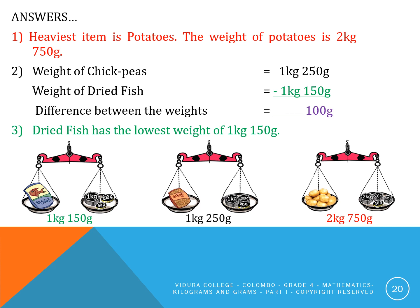Answers. First: the heaviest item is potatoes. The weight of potatoes is 2 kilograms and 750 grams. Second: to find the difference, weight of chickpeas equals 1 kilogram and 250 grams; weight of dry fish equals 1 kilogram and 150 grams. We deduct the weight of dry fish from the weight of chickpeas — the answer is 100 grams. Third: dry fish has the lowest weight of 1 kilogram and 150 grams.